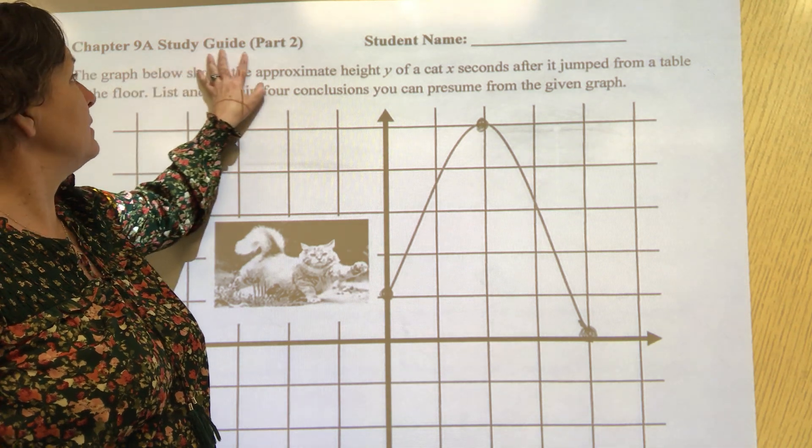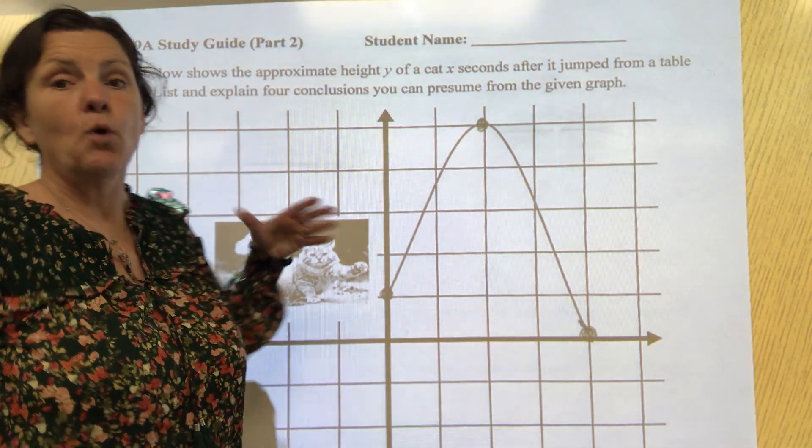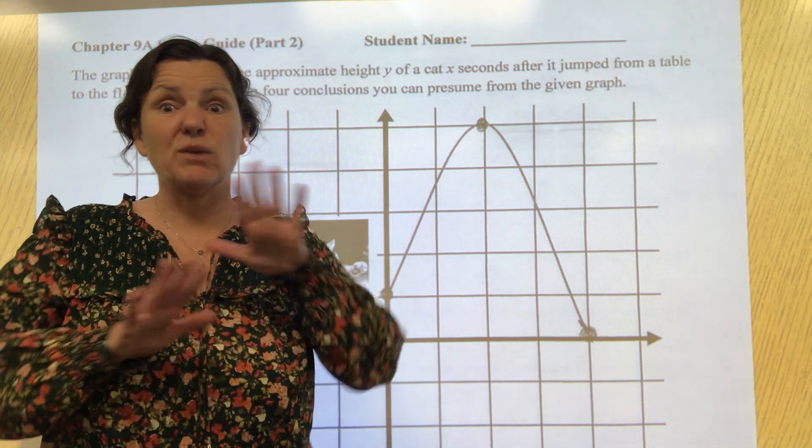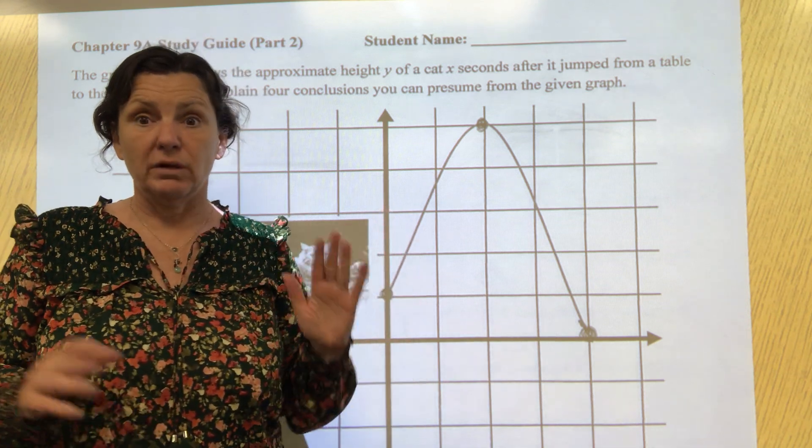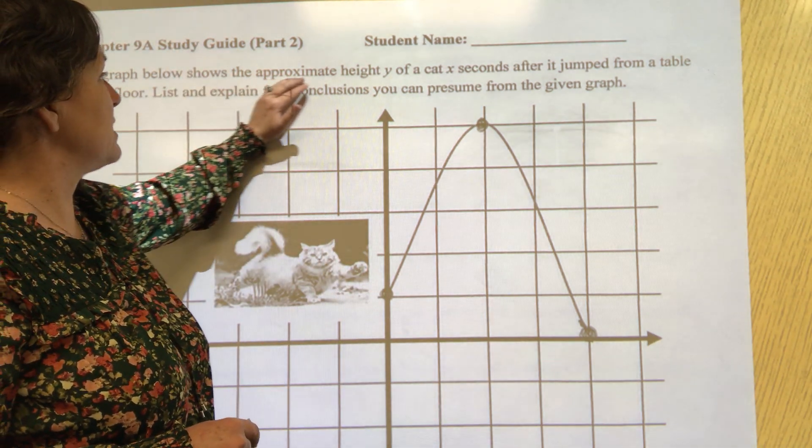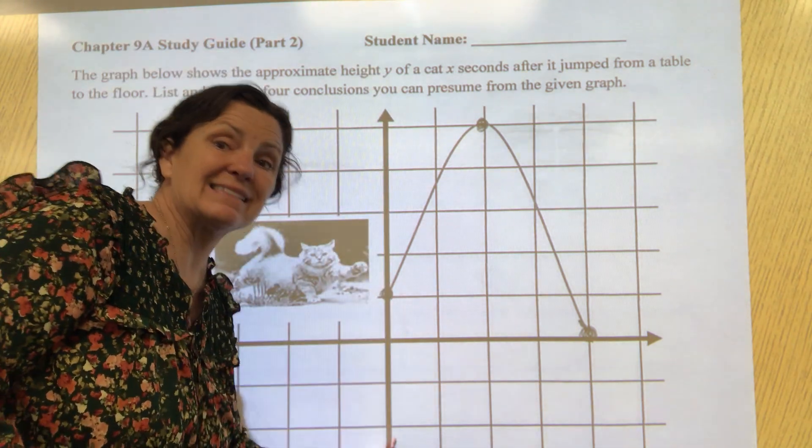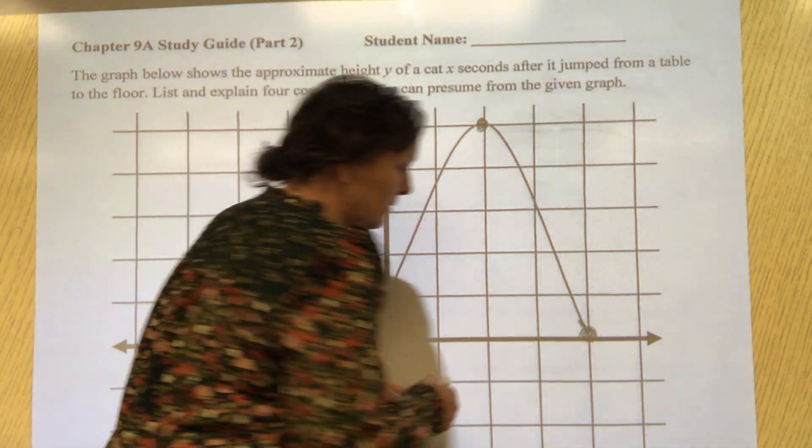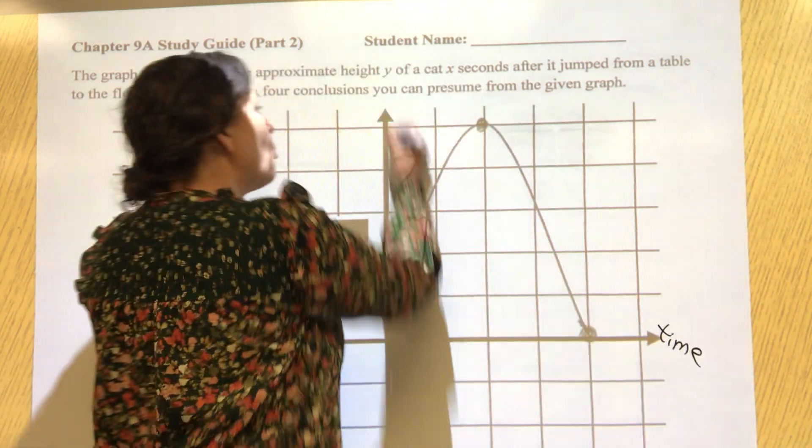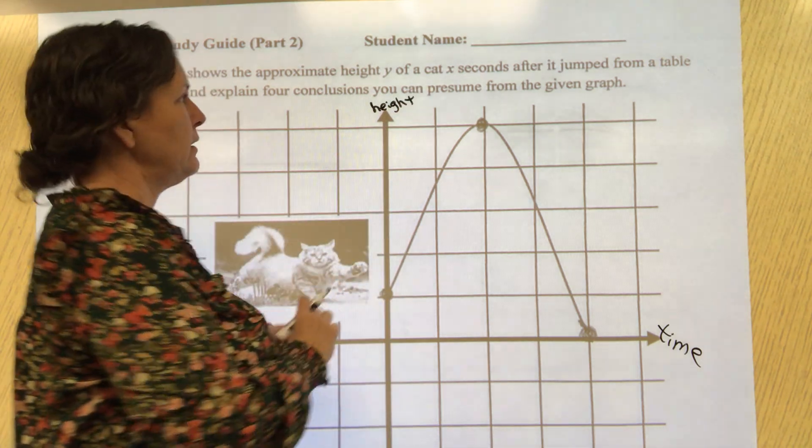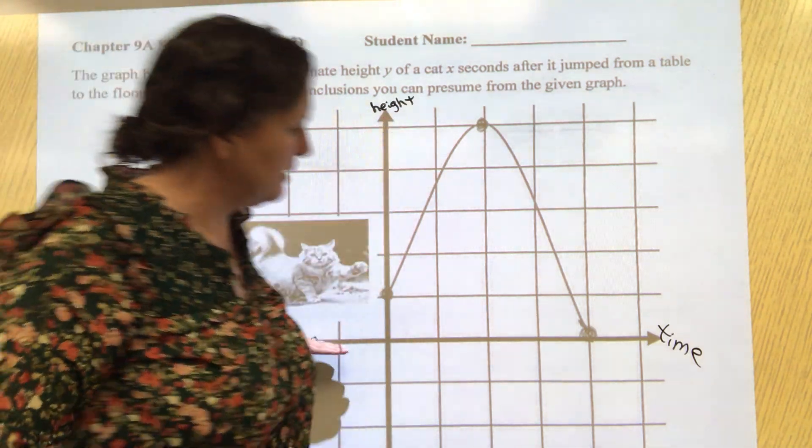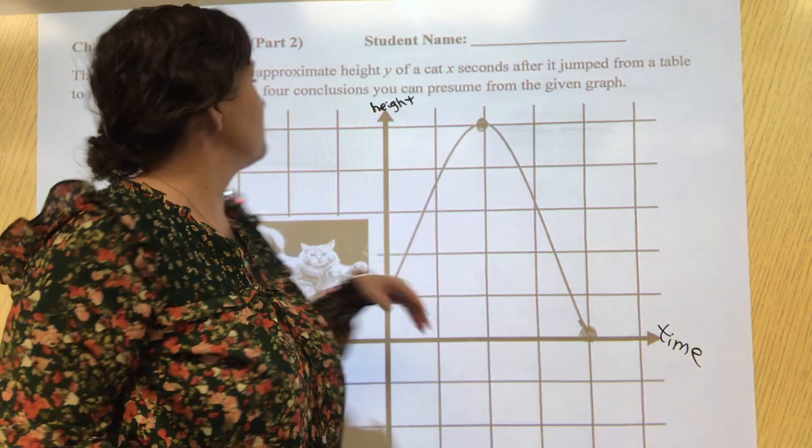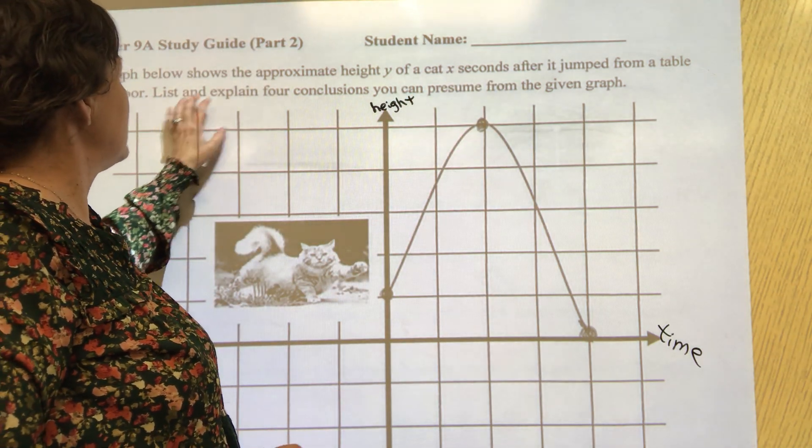Let's read the directions for Study Guide 9A Part 2. Part 2 will have some kind of picture on the front where you get to make some conclusions, and it doesn't even matter what conclusions you give me as long as they are valid. The graph below shows the approximate height y of a cat x seconds after it jumps from a table. So x is time and y is height. This is my y-axis for height, and this is my x-axis for time.